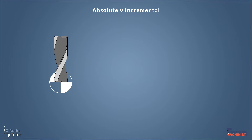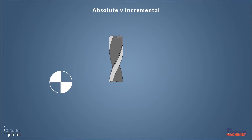I find the easiest way to explain absolute versus incremental is like this. So we start off with our tool on our datum position and if we were to move it 100 millimetres we could represent it like this. And we're going to call this position A.